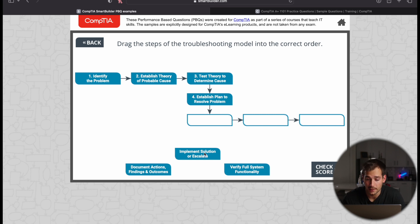And then the next step after that is implement solution or escalate. So CompTIA here wants us to prevent said situation from happening again in the future. So that's where we implement the solution. Or if we can't, we might escalate to another team member.